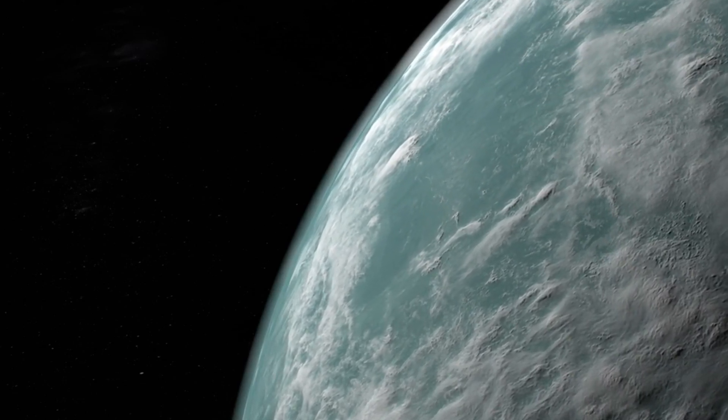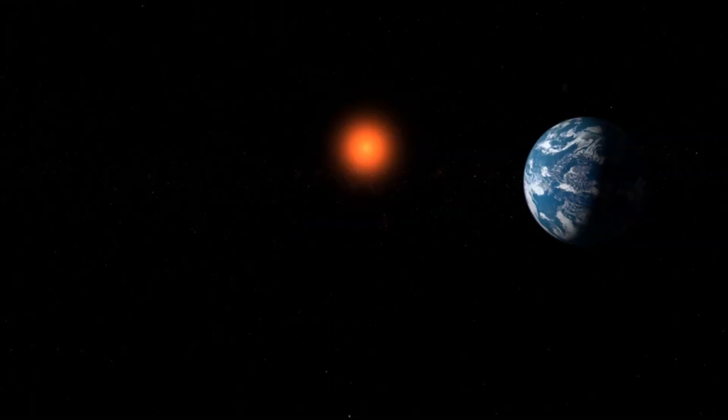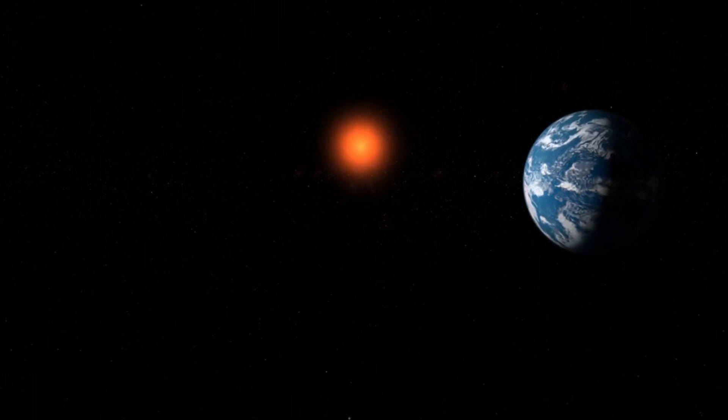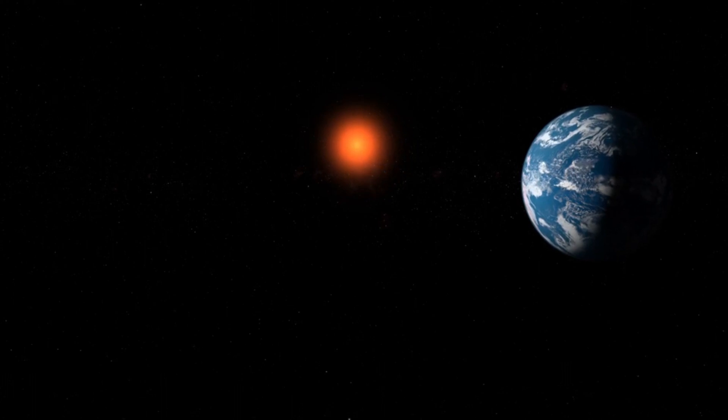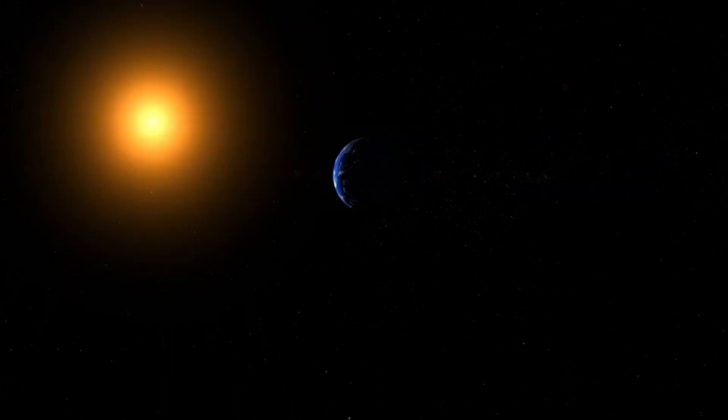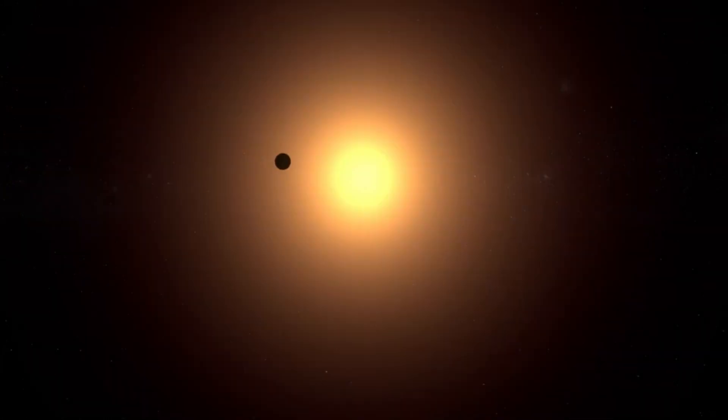The second planet, TOI-700E, lies much closer, at a distance of about 100 light-years in the constellation Dorado. This planet is slightly smaller than Earth, making it an exciting find given its proximity and characteristics. TOI-700E orbits a red dwarf star which is cooler and less luminous than our Sun.